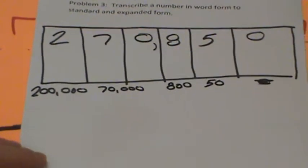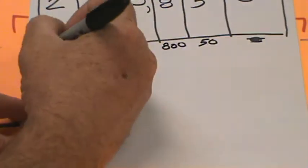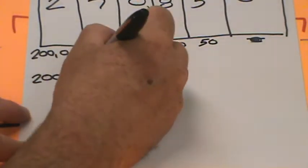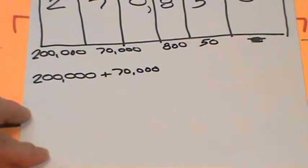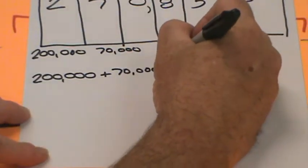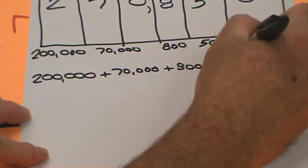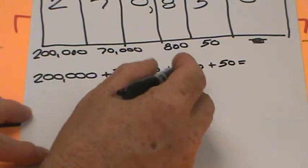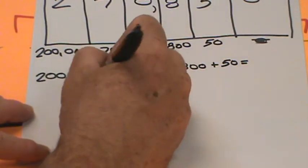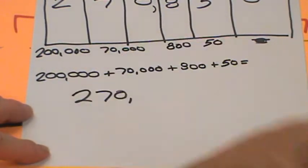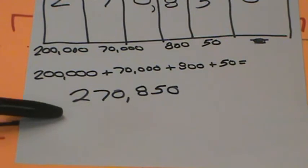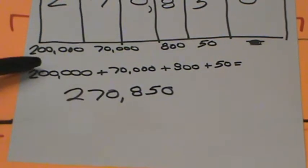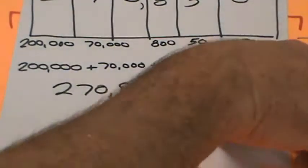Now I'm ready to do expanded form, using the chart like a map: 200,000 plus 70,000 plus 800 plus 50. That equals 270,850 — and we write that in standard form: 270,850. Now that's expanded form and standard form. I forgot to write the answer over there, but we've got it right here.